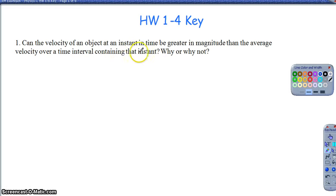So question 1, can the velocity of an object at an instant time be greater in magnitude than the average velocity over a time interval? Why or why not? The short to it is yes. Yes, it can.